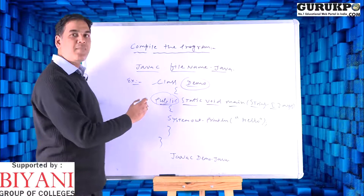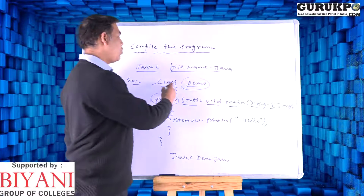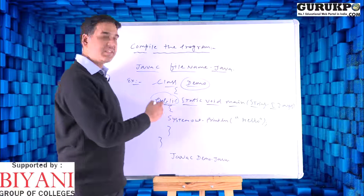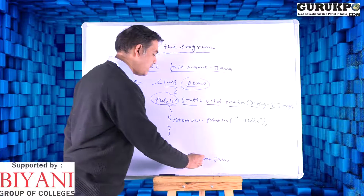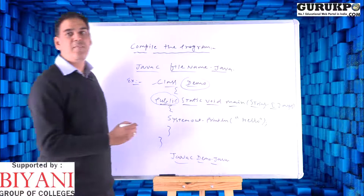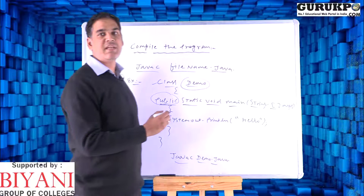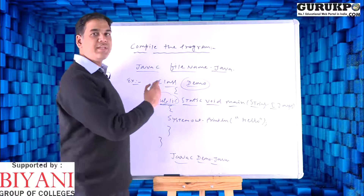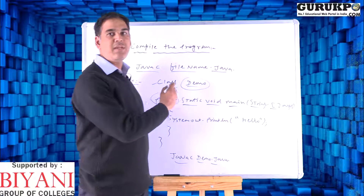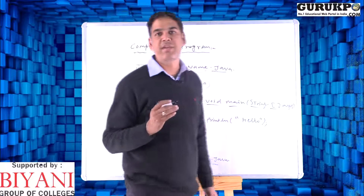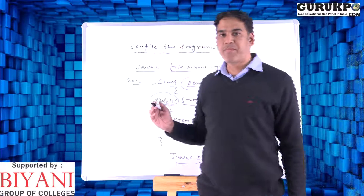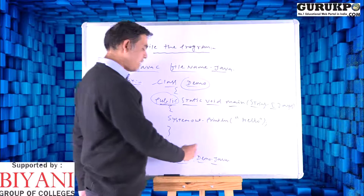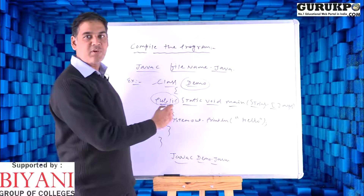Void is used for no return type, and main is the name of the function. This function is called when we load the class after compilation — the class will be loaded and then the program will execute. So javac demo.java will compile the program and create a class file which contains bytecode. After compiling, it will create a demo.class file.